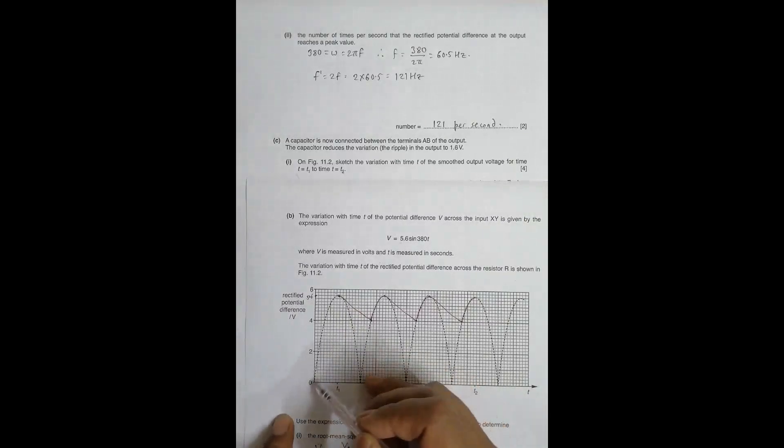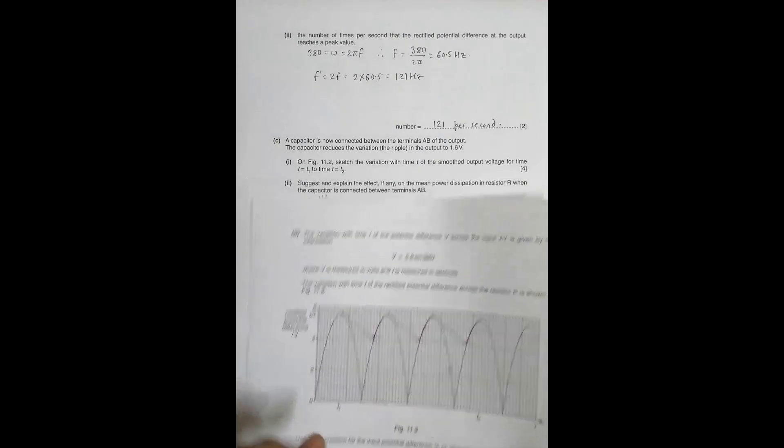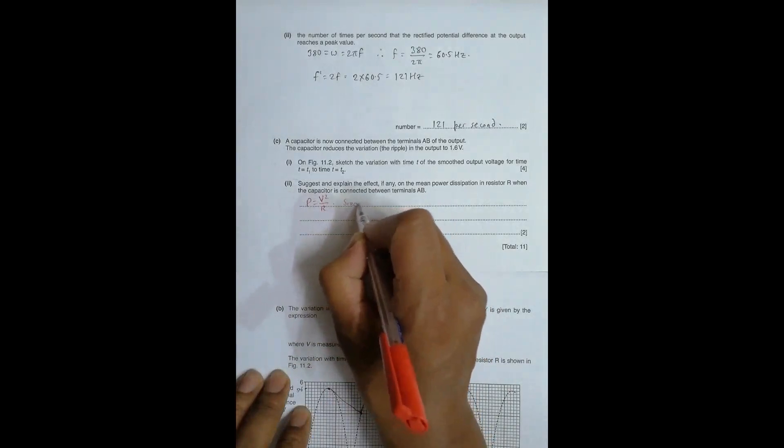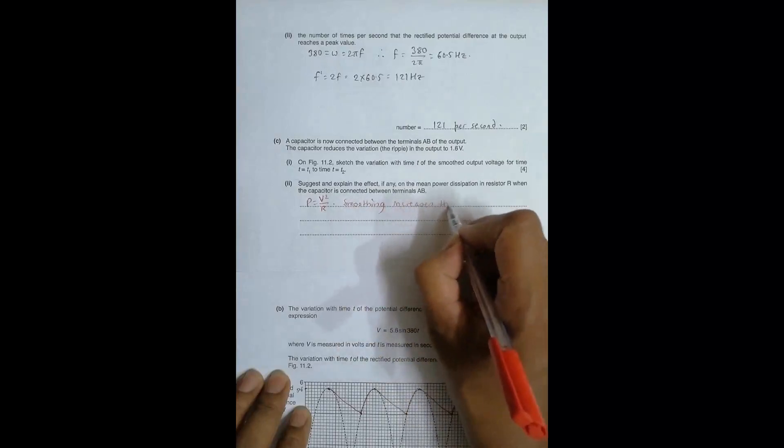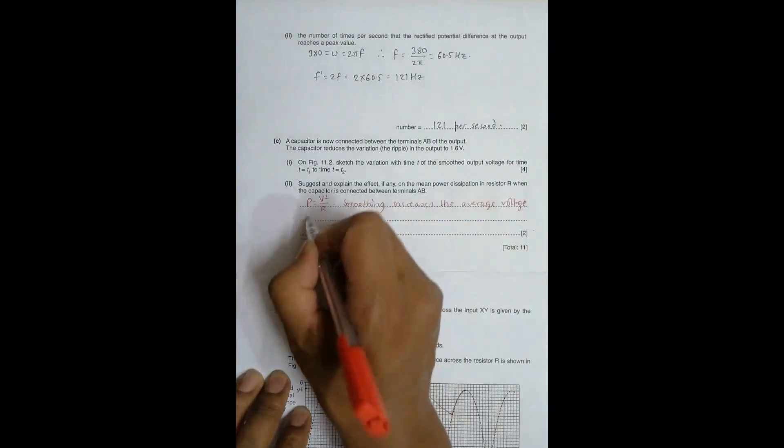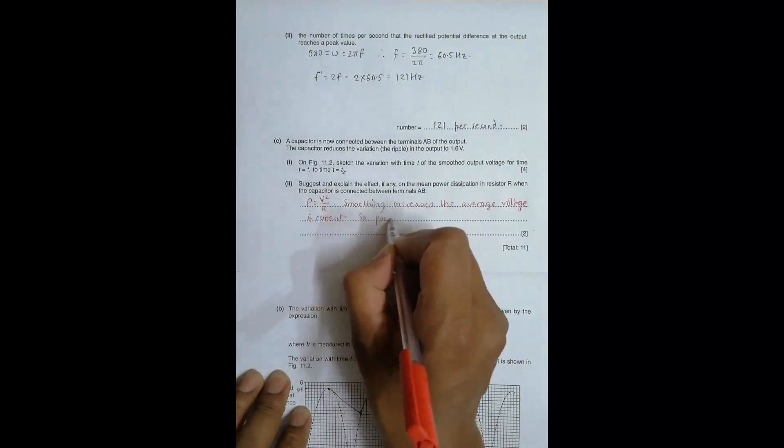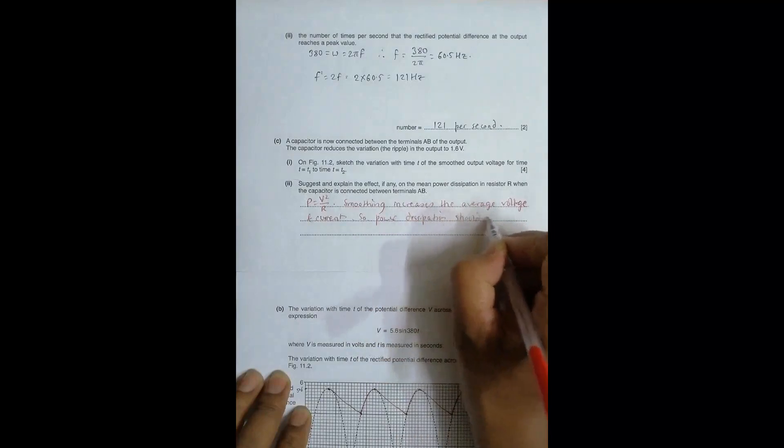So what happens here is, here the variation goes from here to zero. So the average will be somewhat here. And now the variation is only up to here. So that means the average will definitely be more. So if the average will be more then definitely the power dissipation will also be more. That's why smoothing increases the average of voltage and current. So power dissipation should increase.